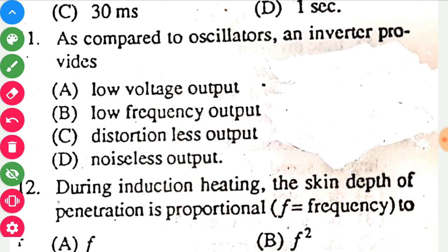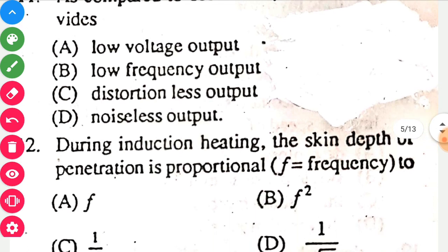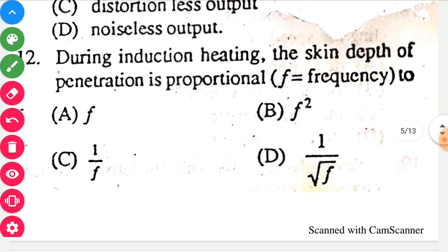As compared to oscillators, an inverter provides low voltage output, low frequency output, and distortion level output. None of the answers make sense because many oscillators range from 0.01 Hz to gigahertz, so option B cannot be correct, and some oscillators have less distorted output so option C is also not correct. We will skip this question.